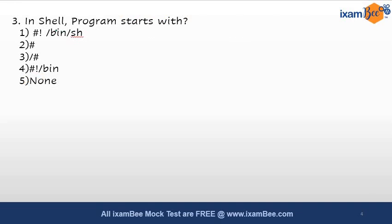The third question asks: in a shell program, it starts with what? In shell, the program starts with a hash followed by an exclamation mark, then /bin/sh — that is, #!/bin/sh. This is what marks the starting of the program in shell programming. This question is related to Unix, which accounts for 5% in phase one.